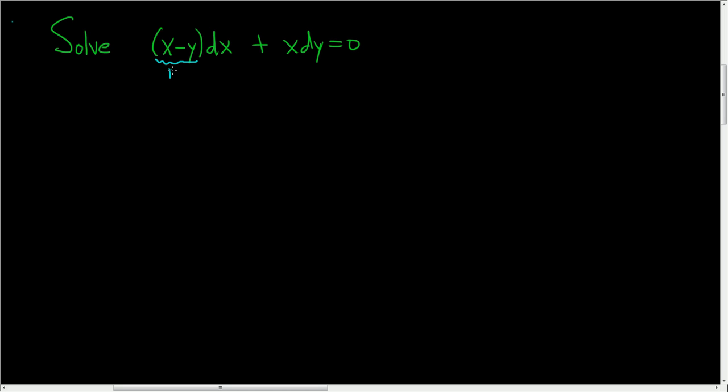So we're going to think of this as big M and this as big N. What we'll do is we'll look at M of Tx, Ty. So that will be Tx minus Ty. And then you can factor out a T, so you end up with T times x minus y.